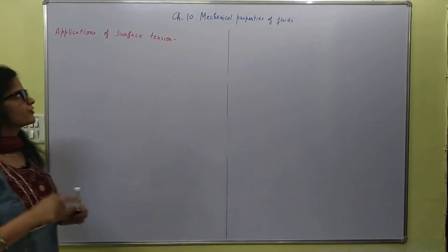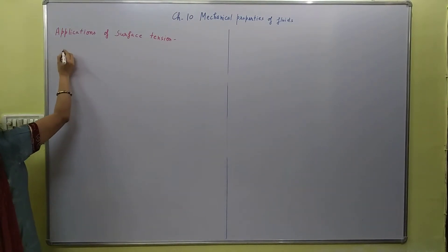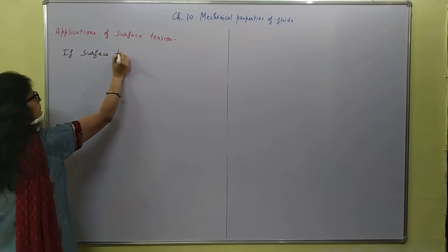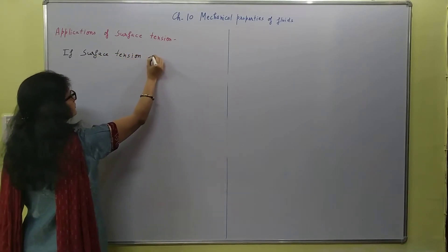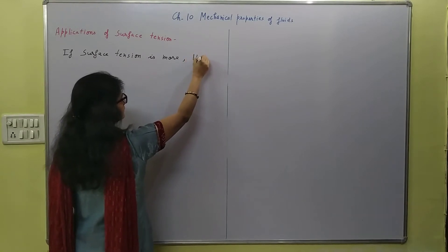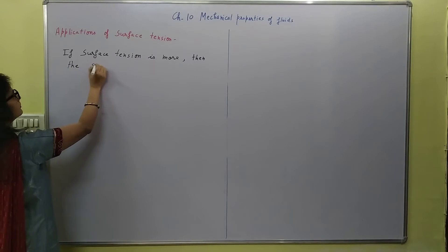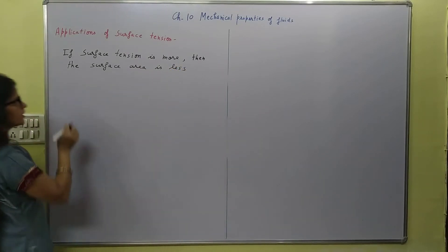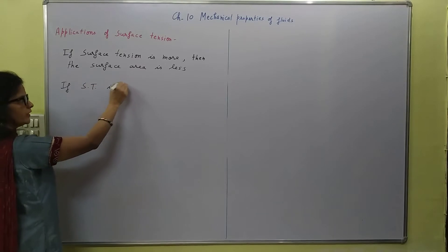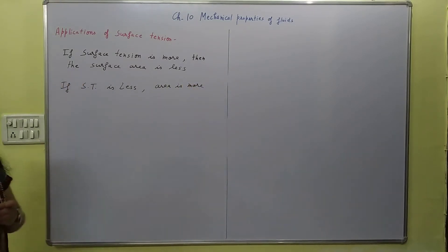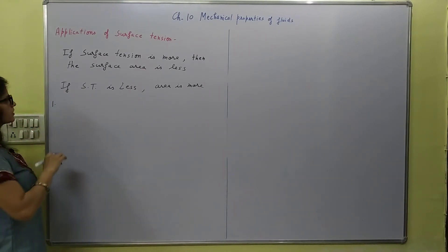First of all, we need to understand what happens when there is low surface tension. We know that if the surface tension is more, then the surface area is less. If surface tension is less, area is more. This is an important concept which will help us in understanding why the detergents and the antiseptics have low surface tension.